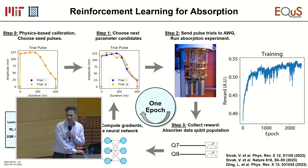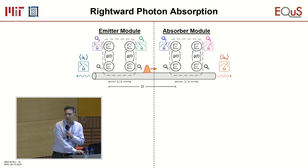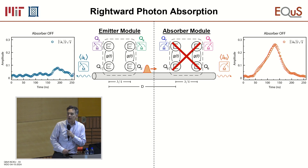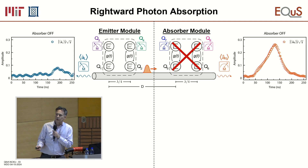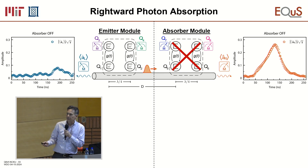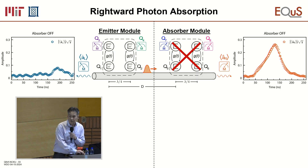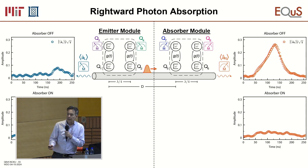This tune-up work is by Leon Ding and Max Hayes. For rightward photon absorption: in the first case we turn off the absorber module, emit a photon from the right, and it should pass by and only go to the right — we do see a photon on the right at room temperature, plus a little on the left due to reflections from the coax cable and connectors. When we turn on the absorber, the photon should get absorbed by qubits seven and eight, so we shouldn't see it at room temperature or on the left.